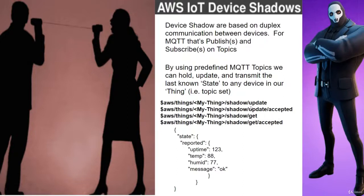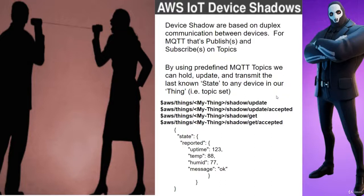The last thing I'll say before we get into implementing this: shadow state on AWS requires a specific format. The format, just like we're used to before, is JSON — but it's the state reported or state desired format. We always need state, and in the JSON packet we need to specify either state reported or desired. From there we can use our normal JSON parameters and key-value definitions. We always have to have state and then either reported or desired.